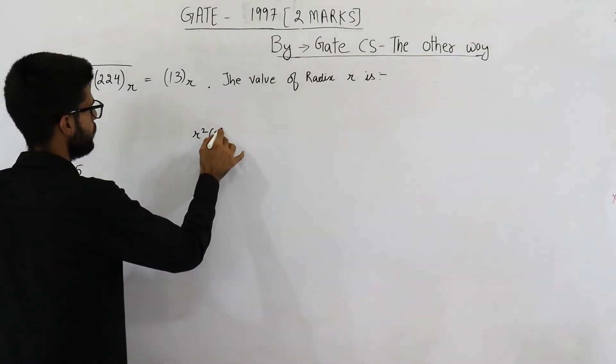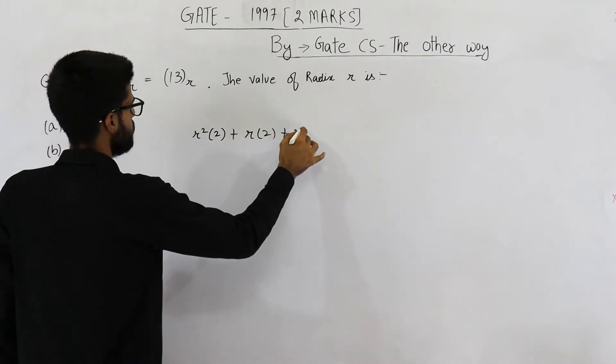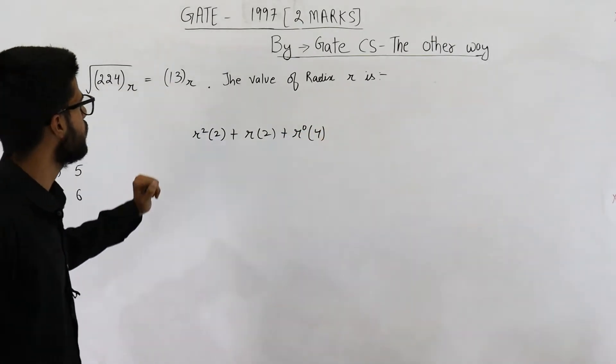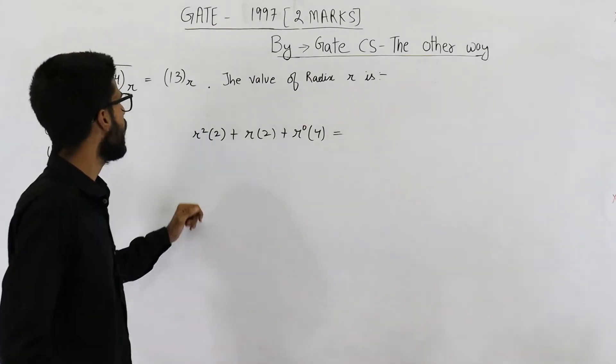Make base of both of these numbers equal to 10. So that will be r square into 2 plus r into 2 plus r power 0 into 4, and this number when converted into base 10 will be r plus 3.